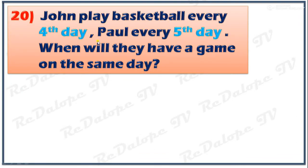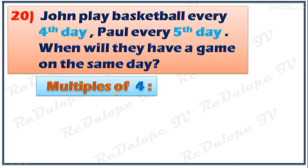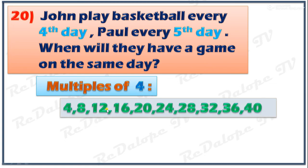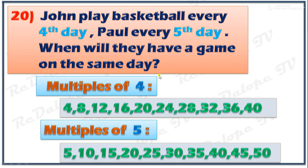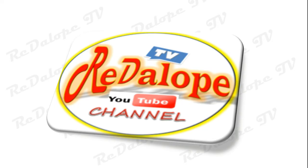Can plays basketball every 4th day, and the other plays every 5th day. When will they have a game on the same day? For the 4th day, the multiples of 4 are 4, 8, 12, and so on. For the 5th day, the multiples of 5 are 5, 10, 15, and so on. The word 'same day' refers to the common multiples of 4 and 5, which is 20. So they will both play the game on the 20th day.